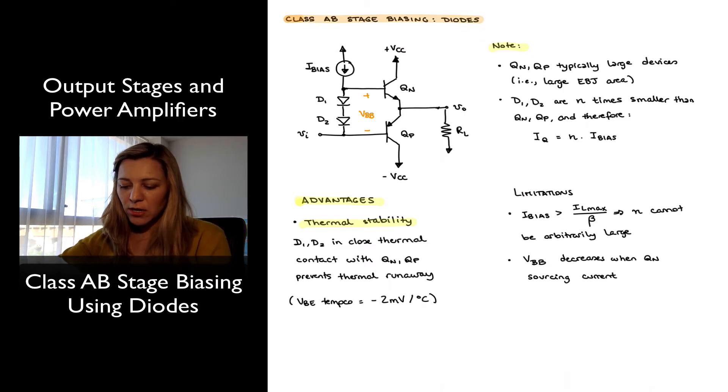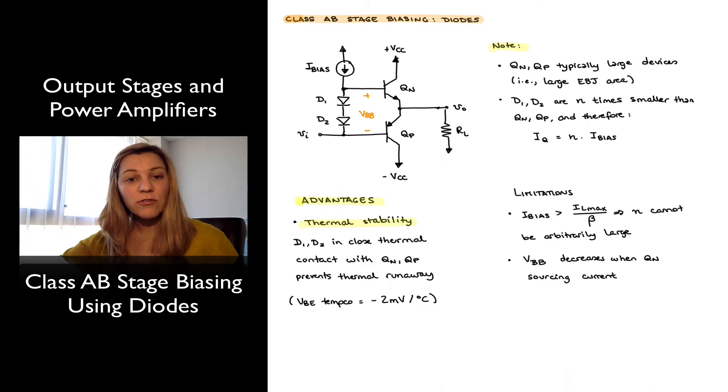Notice that Qn and Qp, as the current flows through those transistors, let's imagine that we have a load that is pulling current to the output, and therefore, transistor Qn is going to be sourcing that current to the load. Now if I have an increase in current through Qn, I have an increase in power dissipation through Qn, and therefore I have an increase in temperature. My junction temperature increases.